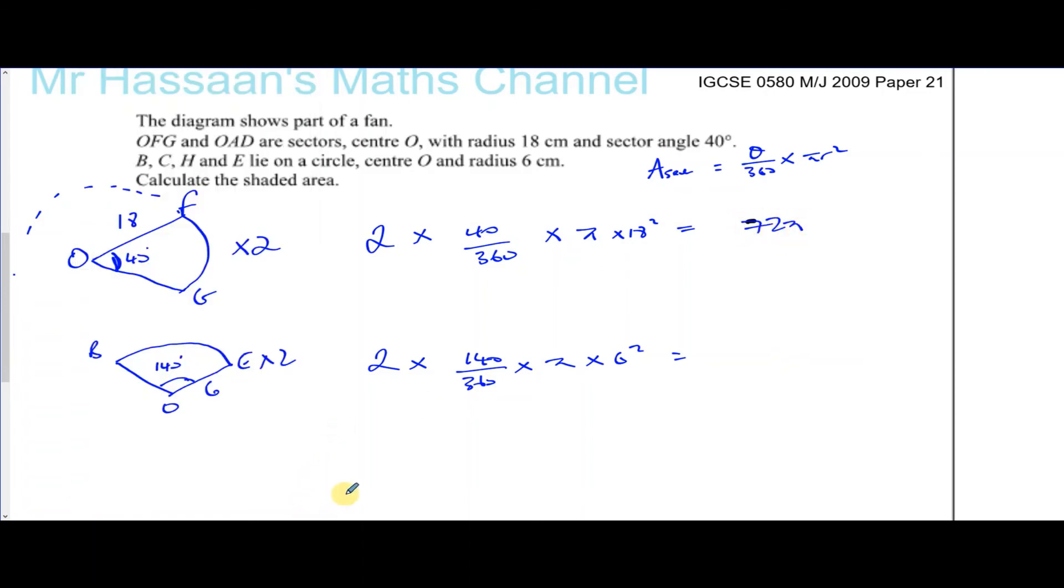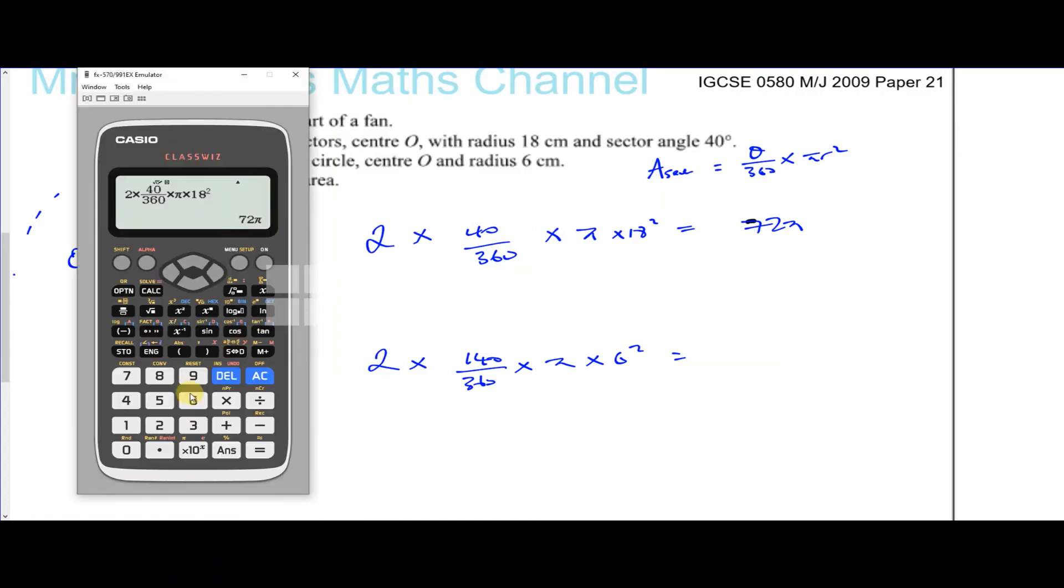At the end I'll round it to three significant figures. This is almost the same—let me just change these numbers. This is 6 and this is 140. So 2 times 140/360 times π times 6 squared, and that gives us 28π.